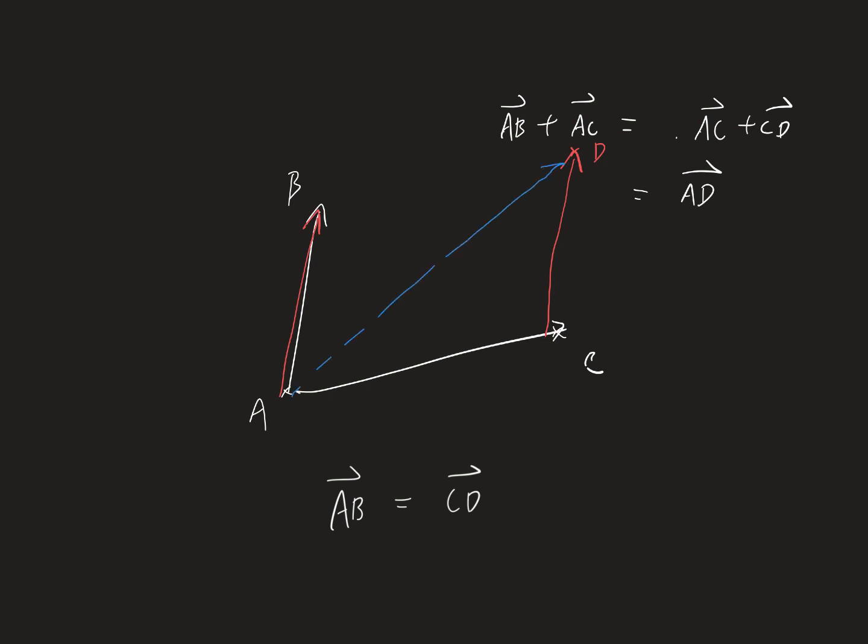We draw the diagonal line across AB and AC and the parallelogram. The diagonal line—the vector direction of AD—will be the result of AB plus AC.